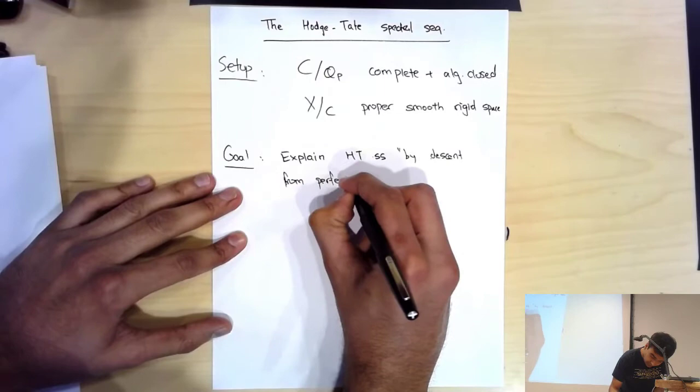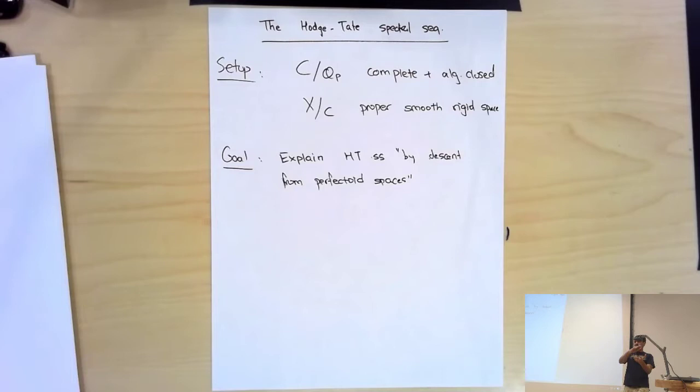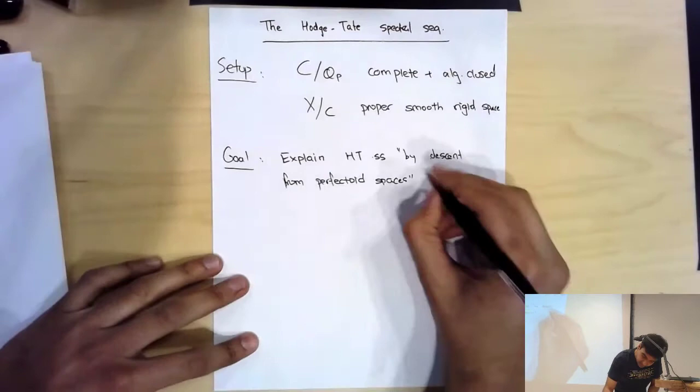Yesterday what we saw in the construction of the second map — the map I called beta for an elliptic curve — is that you look at a big cover of your elliptic curve, which is the inverse limit of multiplication by p. You have nice structure up there in the inverse limit and then you try to descend it back down. You don't have such covers globally for any proper smooth space; we used something very special about elliptic curves. But you always have them locally, and so we need a formalism that makes the argument local. This is the formalism of the pro-étale site.